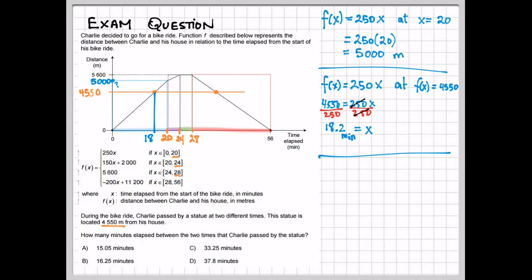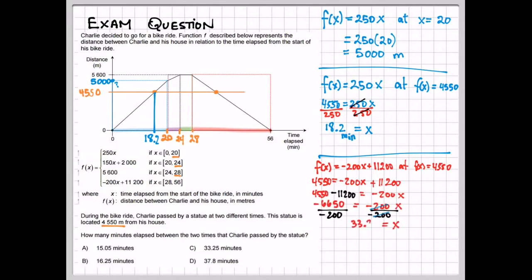The second time he sees the statue happens in the red part. Using minus 200x plus 11,200, we can work backwards again to find the second time he crosses the statue. We use our algebra and work backwards to find that x is equal to 33.25 minutes.